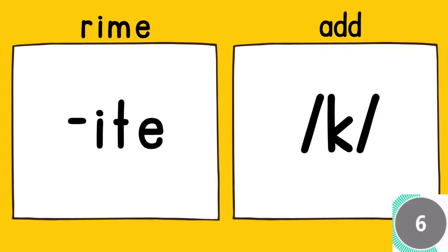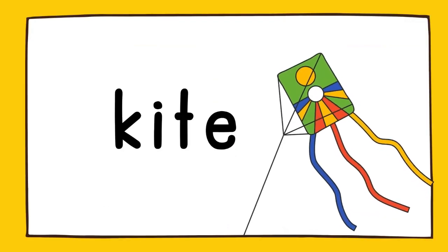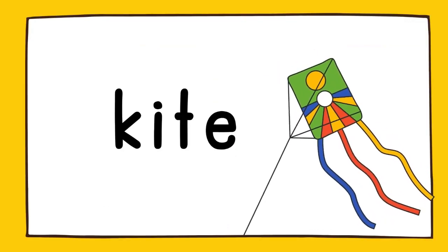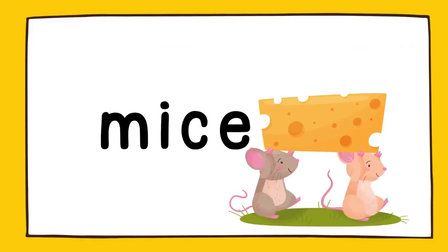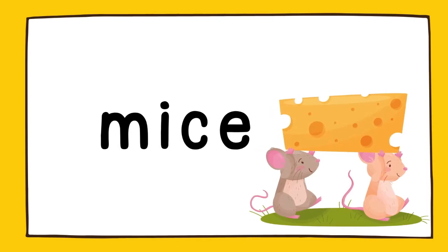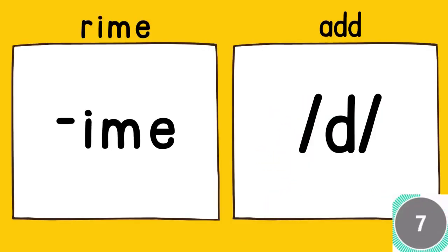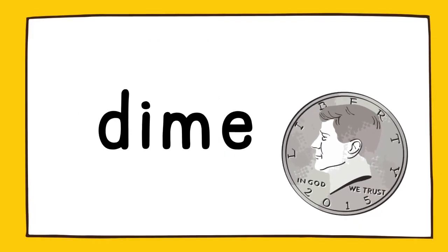The rhyme is ite, add c. Kite. The rhyme is ice, add m. Mice. The rhyme is ime, add d. Dime.